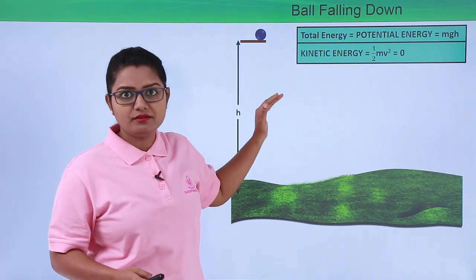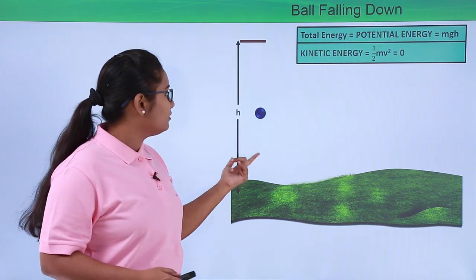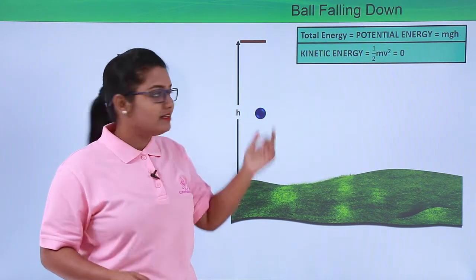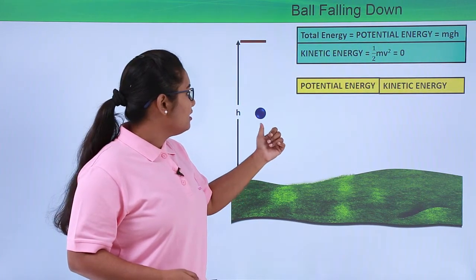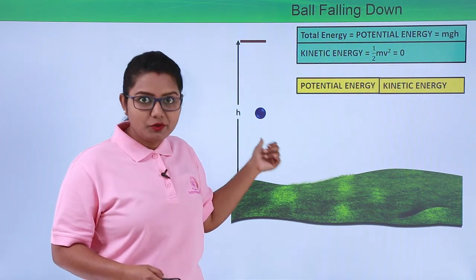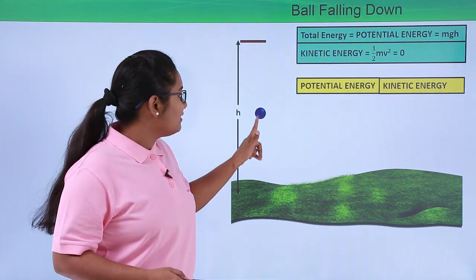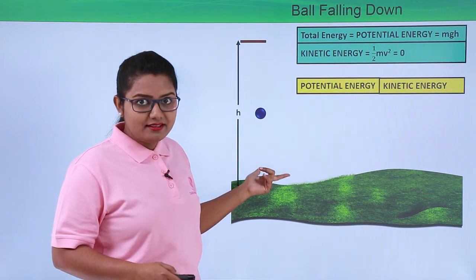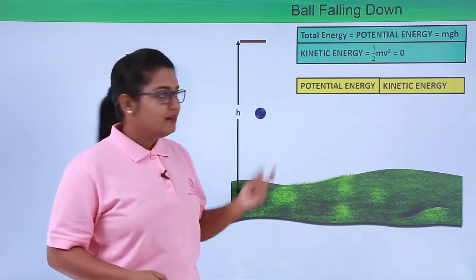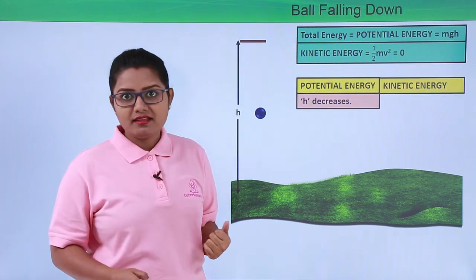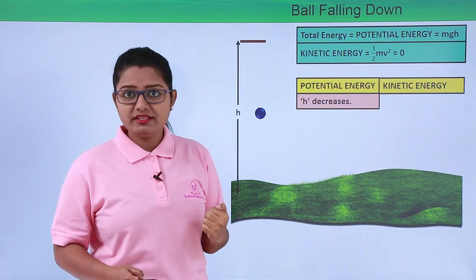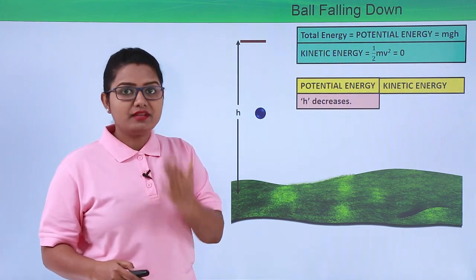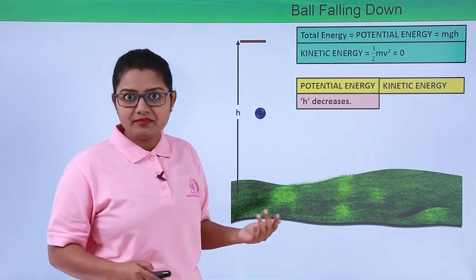So here the body has only potential energy and no kinetic energy at all. Now when this ball starts falling down, let's see what its potential and kinetic energy are. We can see that the height H of this body above the ground has decreased, and it goes on decreasing as the ball falls down. The velocity, which was zero initially, goes on increasing as it moves down, because of the acceleration due to gravity.